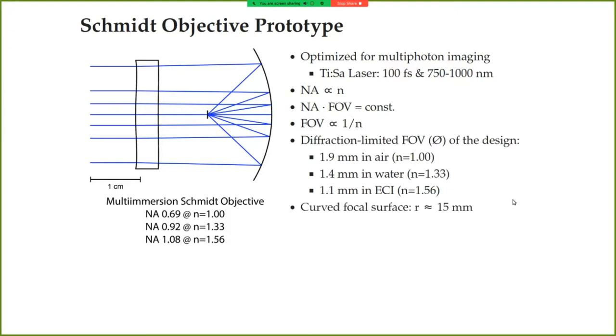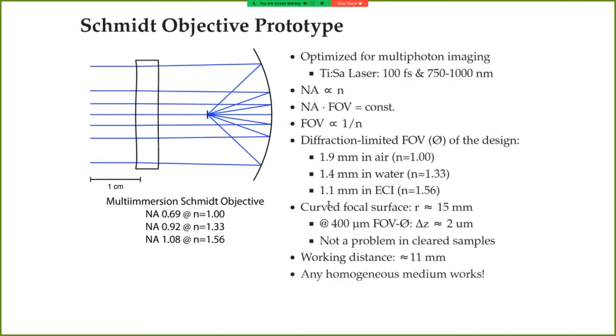These focal surfaces curve with a radius of roughly 15 millimeters. This means in practical terms that for a field of view that has 400 micron diameter, zones that are at the very edge of the field of view will have a focal shift of 2 micron compared to zones at the center of the field of view. And this is usually not a problem in cleared samples. The working distance is approximately 11 millimeters. Of course, in this design, we can discuss a little bit how one defines working distance. In this case, it's just a mechanical distance we can move before we hit the mirror with a larger extended sample. And as I pointed out, any homogeneous medium works. And obviously, the sample partially blocks the optical path, both in the excitation and detection path, but this is totally acceptable up to sample sizes of six by six millimeters.